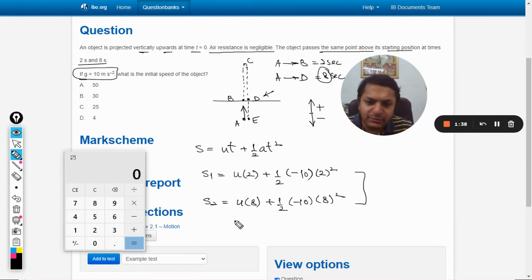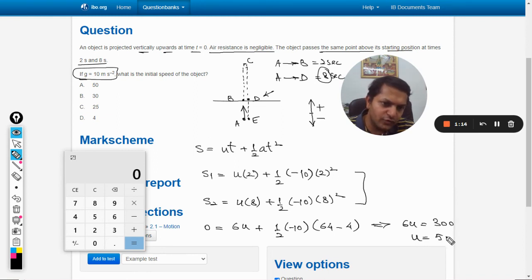Let us subtract them, that will be better. This will be 0. 8u minus 2u is 6u plus half minus 10. It will come out to be 64 minus 4, that will be 60 divided by 2 will be 30 into... it will be 300. So 6u is equal to 300 and u will come out to be equal to 50 meters per second.